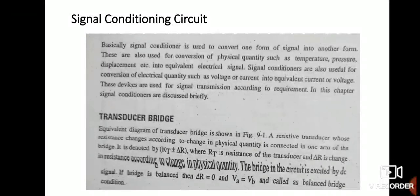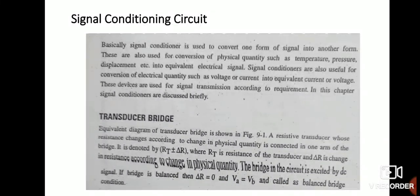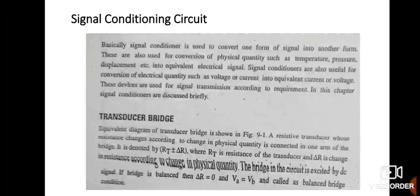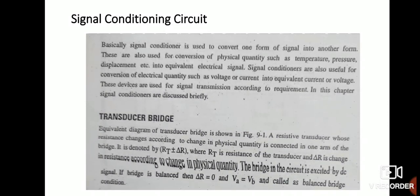Now we will discuss the signal conditioning circuit, which is very important for controlling temperature-based devices. Signal conditioning is a circuit used to convert one form of signal into another. It converts physical quantities such as temperature, pressure, or displacement into an equivalent electrical signal — acting as a transducer. The electrical signal may be voltage or current. Signal conditioning circuits convert voltage to current or current to voltage as required.